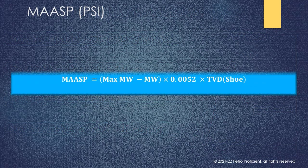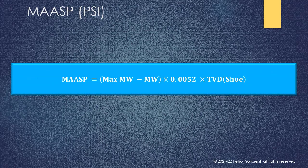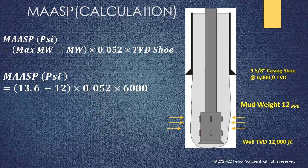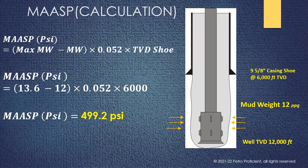MASP is calculated using the given mathematical equation. From the same example of a well with casing shoe at 6000 feet depth, MASP can be calculated by substituting the value of maximum mud weight into the MASP equation. The value of MASP for this situation is 499.2 pounds per square inch. In other words, the pressure at the well head should not exceed 499.2 pounds per square inch. The value of MASP will change if we change the mud weight in the well.